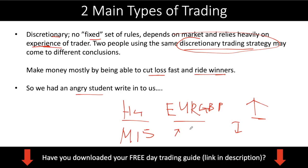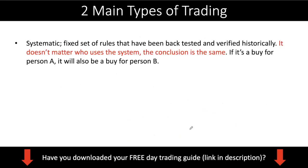Systematic trading, on the other hand, is a trading style where you have a fixed set of rules that can be backtested and verified historically — meaning you can look at past results or even forward test it to see whether it works. It is a fixed set of rules, so no matter who uses the system, the conclusion is always the same. If you ask your kid — your son or daughter — whether it's a buy, they should be able to tell you it is a buy as well. If it's a buy for person A, then it is also a buy for person B, C, and D. So systematic trading might be your solution because: number one, you're able to backtest it; number two, it's verified historically; and number three, the conclusion is always the same — there is no subjectivity involved.